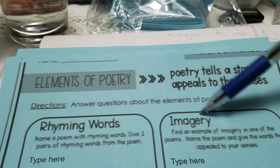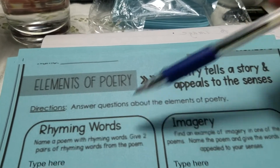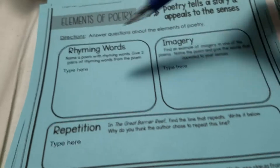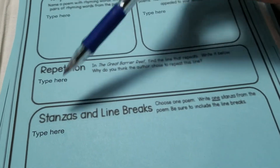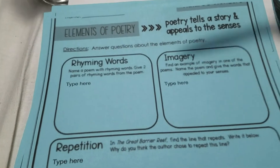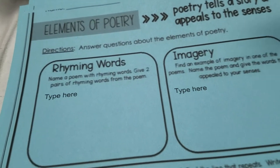Some of the elements of poetry they want you to be aware of are rhyming words, imagery — that's putting pictures in your head — repetition, stanzas, and line breaks. That's the physical way that a poem looks on the page: how is it broken down into lines and stanzas?